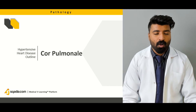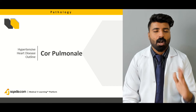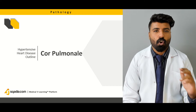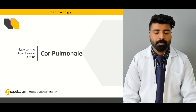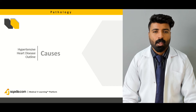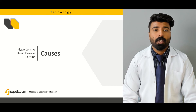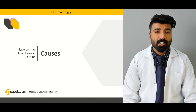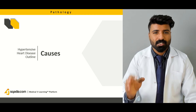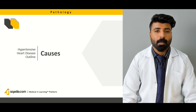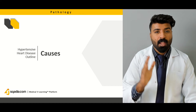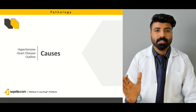We're going to talk about the sequence of events that may lead to the development of cor pulmonale, and the causes of cor pulmonale. We'll also discuss the causes of systemic hypertensive heart disease, and throughout this lecture we're going to be comparing between systemic hypertensive heart diseases and pulmonary hypertensive heart diseases.